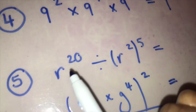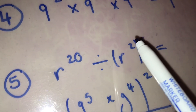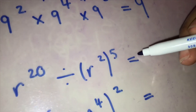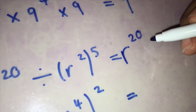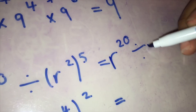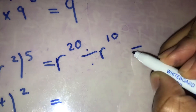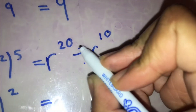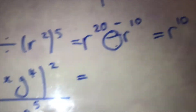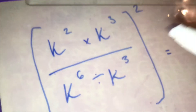This one here: r to the power of twenty divided by r to the power of two, and then to the power of five. So you write this again — r to the power of twenty divided by r to the power of ten, because two times five is ten. You've got two r's, you're dividing, so you take away the powers — twenty take away ten is ten — so the answer is r to the power of ten.